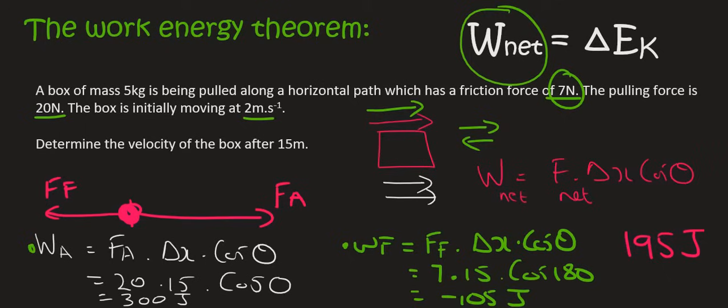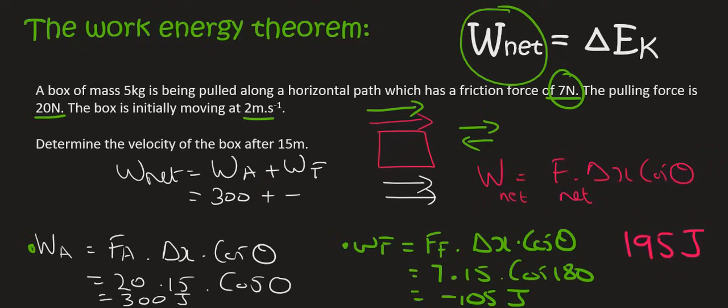And so if you want to work out the net, then net means total. So that would be wa plus wf. And so that's going to be 300 plus negative 105. And that's going to give you 195 joules. And that's what we got when we did the other method. So guys, you must decide what's best for you. I'm going to keep showing you two methods, at least for the next few videos, just so you can see that there are two different ways. And then you must do whatever's best for you.